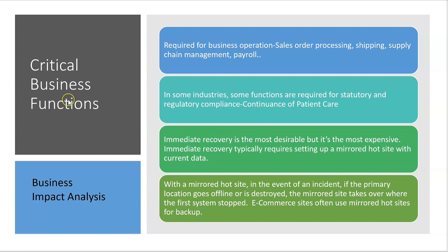Critical business functions must be ranked against one another because immediate recovery is the most desirable when an event occurs, but it is also the most expensive. Immediate recovery typically requires setting up a mirrored hot site with current data. In the event of an incident, if the primary location goes offline or is destroyed, the mirrored site takes over where the first system stopped. An e-commerce site like Amazon would use mirrored hot sites for backup.